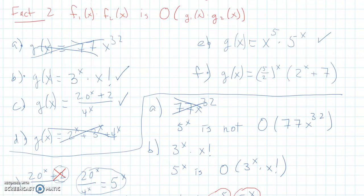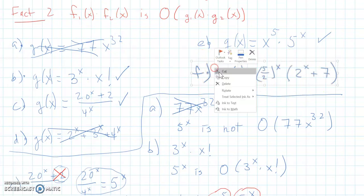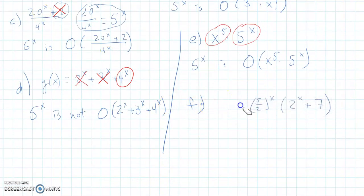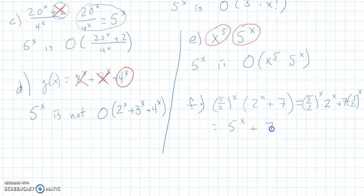And the last one, this last one here, f. Well, we're going to do something similar to what we did with c. And we're going to use some algebra to multiply this out. Notice that this is equal to, if I distribute the 5 halves to the x, this is going to be 5 over 2 to the x multiplied by 2 to the x plus 7 times 5 over 2 to the x. But that's equal to 5 to the x plus 7 times 5 halves to the x. Well, I'm adding two things together. So I only keep the largest one, which is 5 to the x.